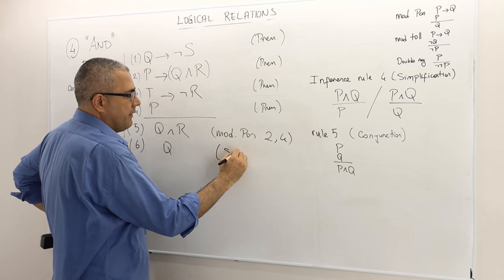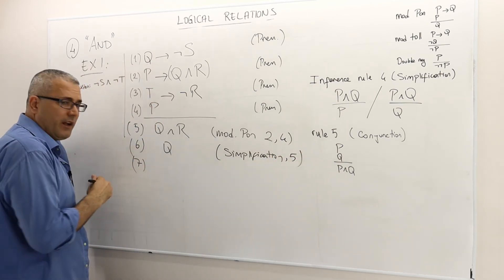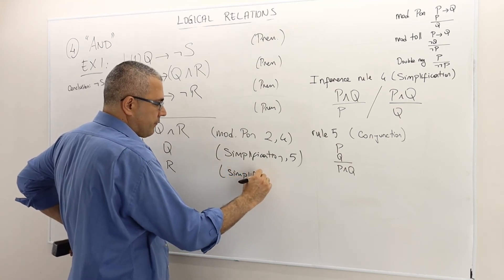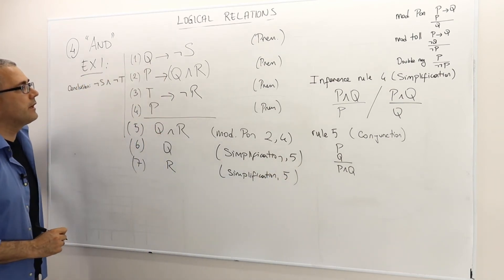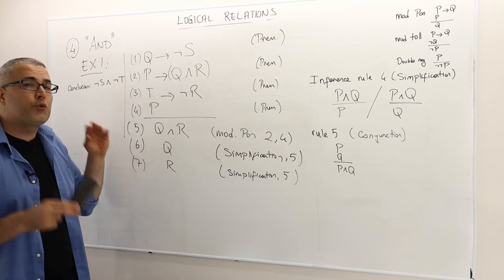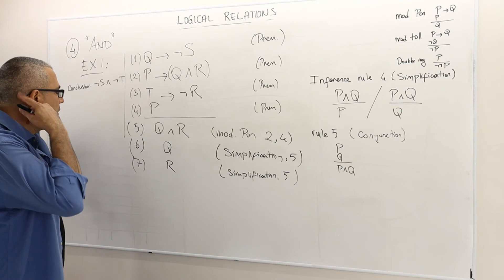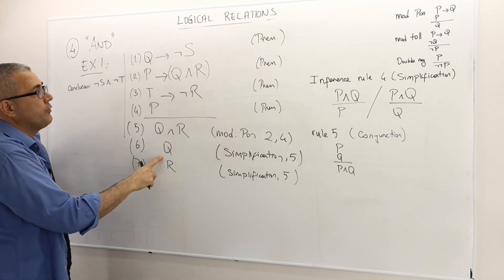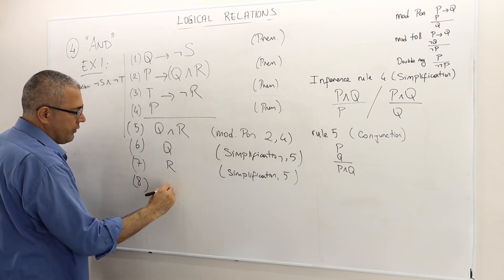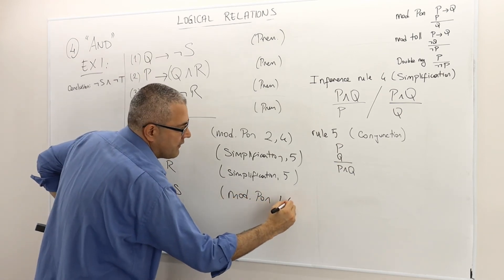Once I have Q and R as a true statement, I can use simplification. Q must be true by simplification of line 5, and R must also be true by simplification of line 5. Now Q is true and Q implies not-S is true, so by modus ponens of line 6 and line 1, not-S must be true.